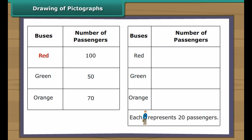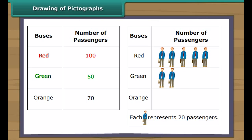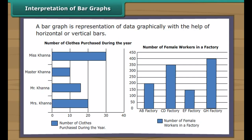Drawing of pictographs: Let us now draw a pictograph with the help of the given data. We use the picture of a travelling man to represent bus passengers. As the numbers are large, one picture represents 20 passengers. The red bus carried 100 passengers, so five pictures represent 100 passengers. The green bus carried 50 passengers — two pictures for 40 and half a picture for the remaining 10. The orange bus carried 70 passengers — three pictures for 60 and half a picture for the remaining 10.